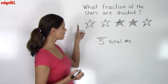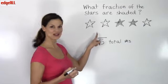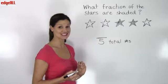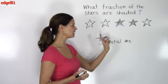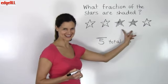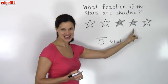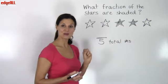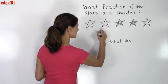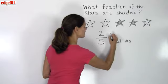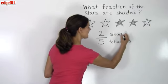Now our numerator, the number that's going to go here, is going to show how many parts of the whole group are shaded. So I can count that I have two shaded stars, and so my numerator is going to be two because two of my stars are shaded.